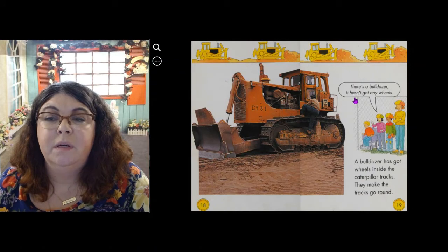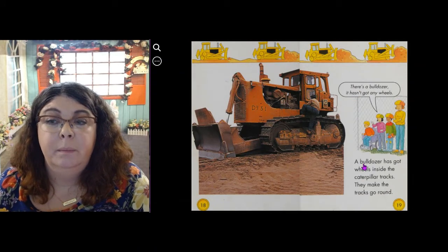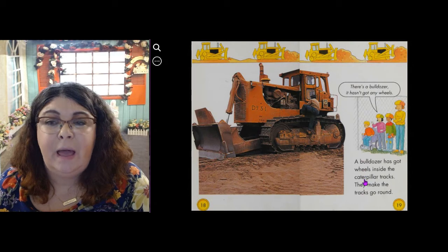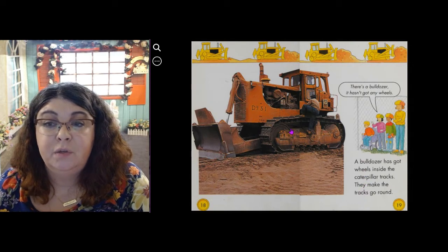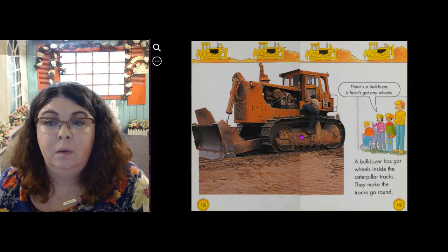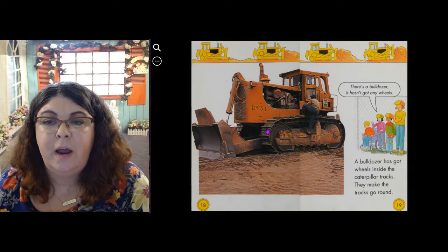There's a bulldozer. It hasn't got any wheels. A bulldozer has got wheels inside the caterpillar tracks. They make the tracks go round. So you see here are the wheels inside, inside the tracks.